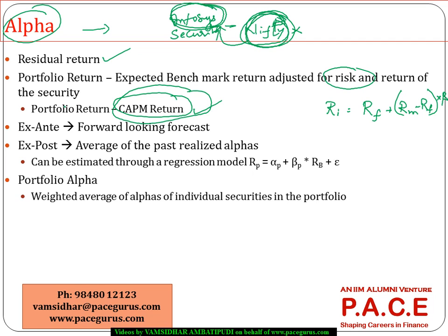Now, what is the exact return which the security has generated over the benchmark return? That is what I typically call as the alpha of the security. The actual return above the expected return — where the expected return is derived by comparing to a benchmark and adjusting that benchmark return with the risk of the security being monitored. The most common form is the CAPM-based expected return. The actual return above the expected return is the alpha, and we can compute alpha through a regression relationship.